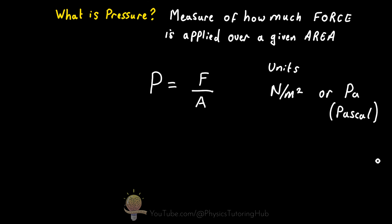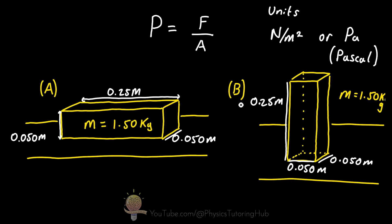Let's try and visualize this with an example. We have two metal blocks made of the same material with the same dimensions — in other words, they have the same mass. One block is at rest on its side and the other is at rest on one of its ends. The dimensions are 0.25 meters by 0.05 meters by 0.05 meters. Which block is exerting the highest pressure on the surface it's resting on, and what is this pressure in pascals?